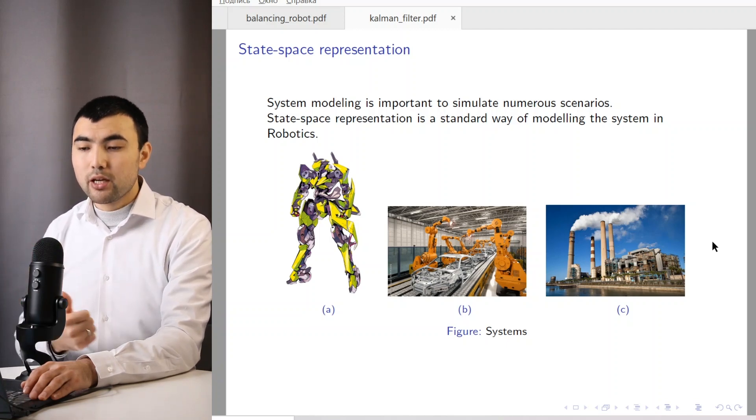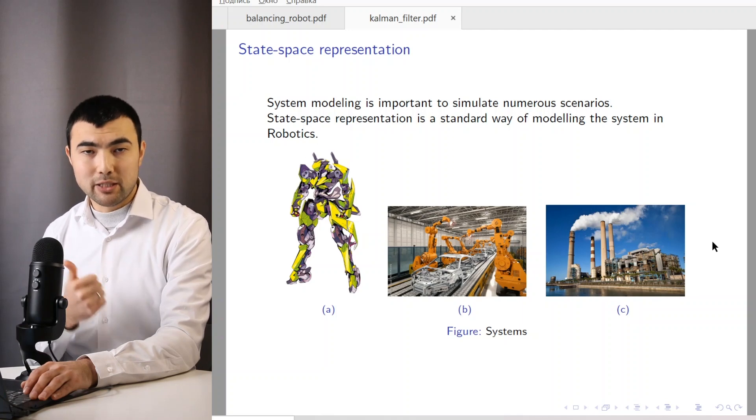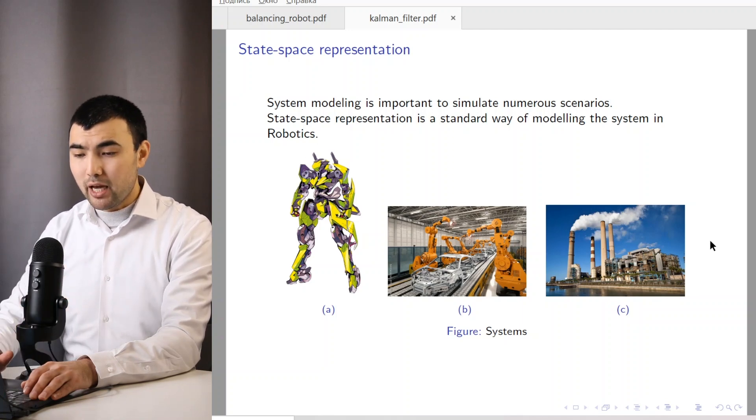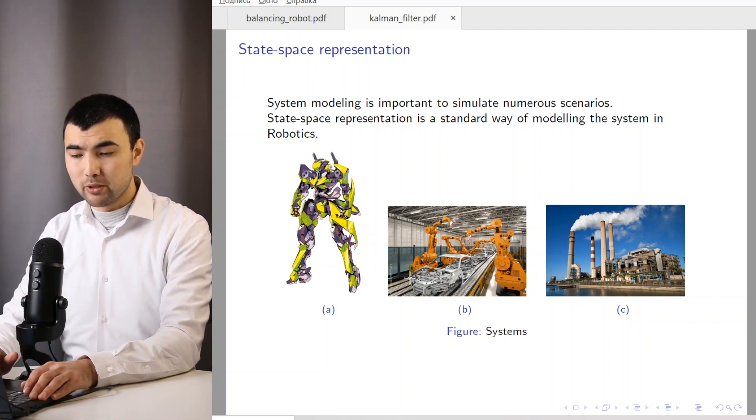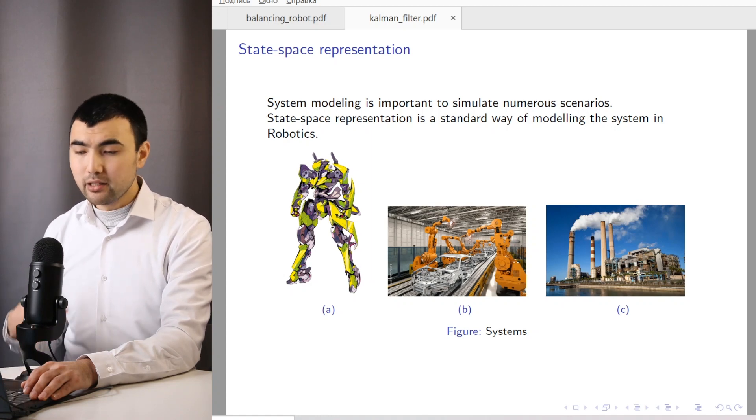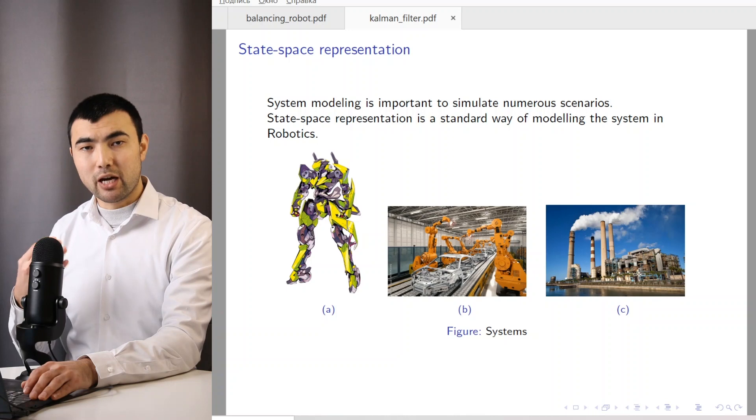And the first step toward that is to study state-space representation. If we have any system, it can be a robot, vehicle, or even a factory. It is important to model it, because a modeling system allows us to test the system before actually building it.